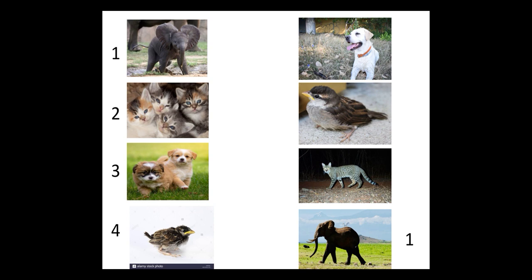Number 2 is the picture of kittens. Kittens are the young one of a cat. Now we have to find a cat. Where is cat? Here is cat, number 2.